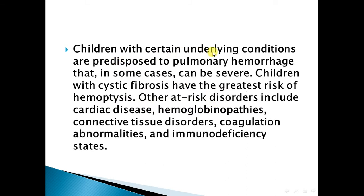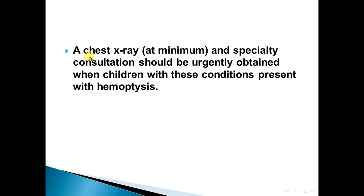Children with certain underlying conditions are predisposed to pulmonary hemorrhage, which in some cases can be severe. Children with cystic fibrosis have the greatest risk of hemoptysis. Other at-risk disorders include cardiac disease, hemoglobinopathy, connective tissue disorder, coagulopathy, and immune deficiency status. Chest x-ray at minimum and specialty consultation should be urgently obtained when children with these conditions present with hemoptysis.